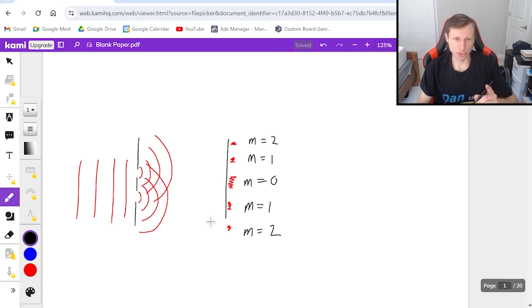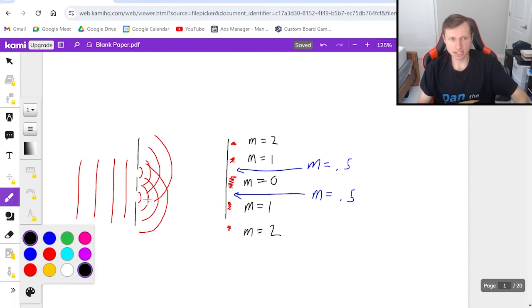Now what's interesting, and this usually tricks up a lot of students, is that the spaces in between are called the dark fringes, and they also have an m value. You're going to see me call it m equals 0.5, and same thing on the other side, m equals 0.5.